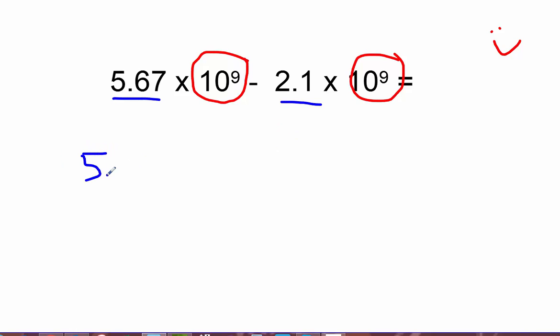Let's do this over here to the side. So I've got 5.67 subtract 2.1. We can do the math. Bring down our 7, 6 minus 1 is 5, and 5 minus 2 is 3. So 3.57 is our answer here.